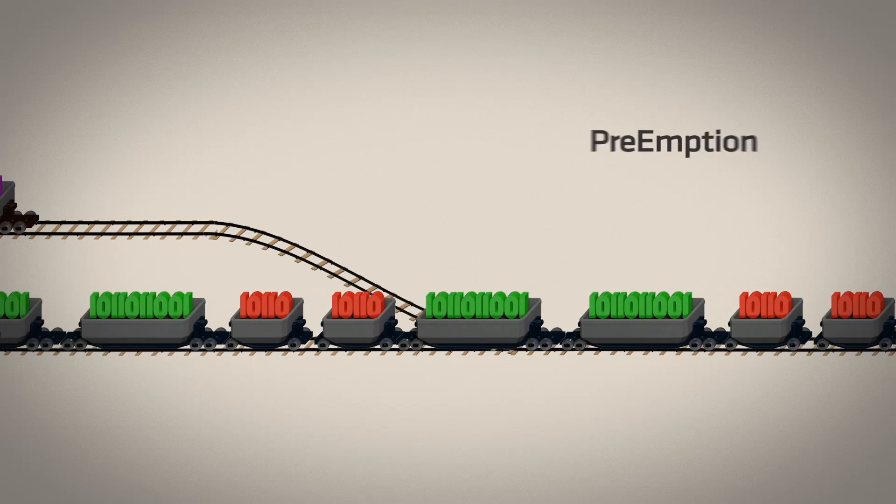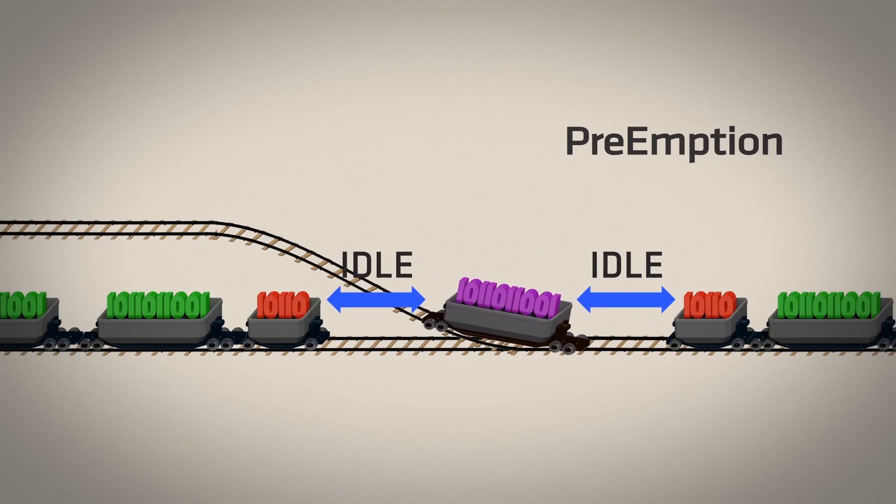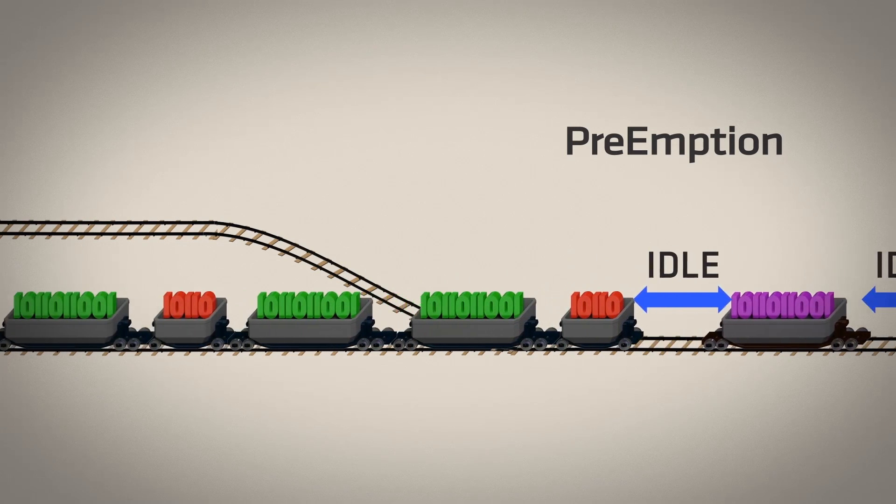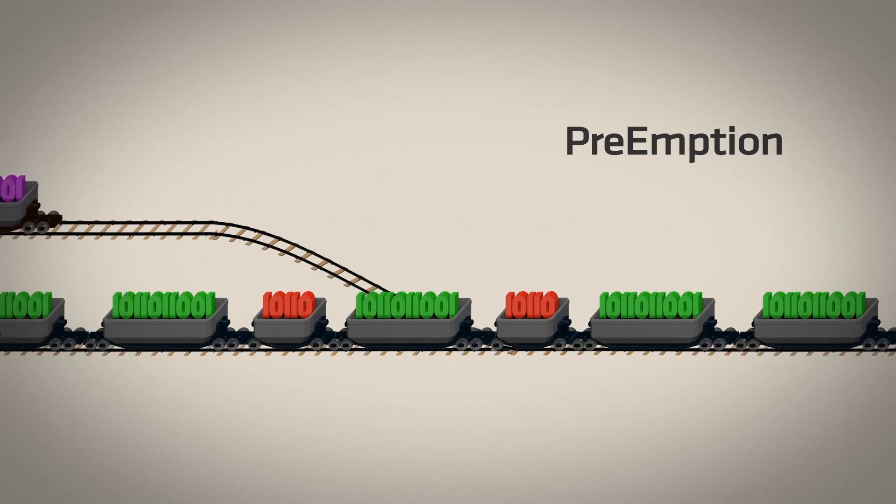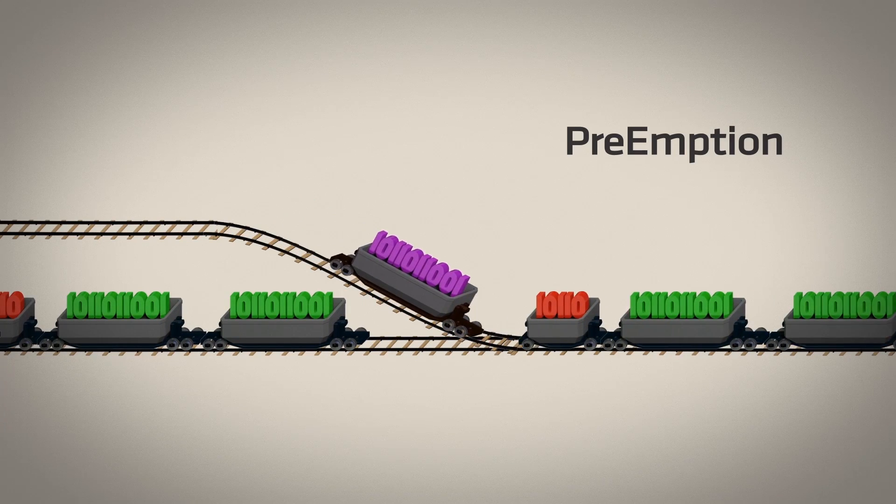A partial remedy involves preemption, prioritizing some tasks over others. High-priority tasks are executed while low-priority tasks are suspended. Preemption deals with data traffic timing issues, but task switching overhead can actually lower overall efficiency.